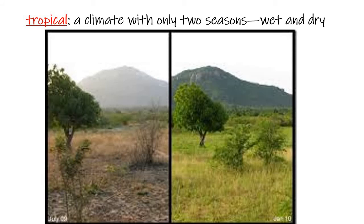Another type of climate is a tropical climate, t-r-o-p-i-c-a-l — these are found around the equator. Rather than having four distinct seasons, tropical climates really only have two seasons. The temperature is warm throughout the year, and the difference between seasons is a particularly wet summer with lots of rain, and a dry winter with very little rainfall. You can see here the difference between the dry season and the wet season.